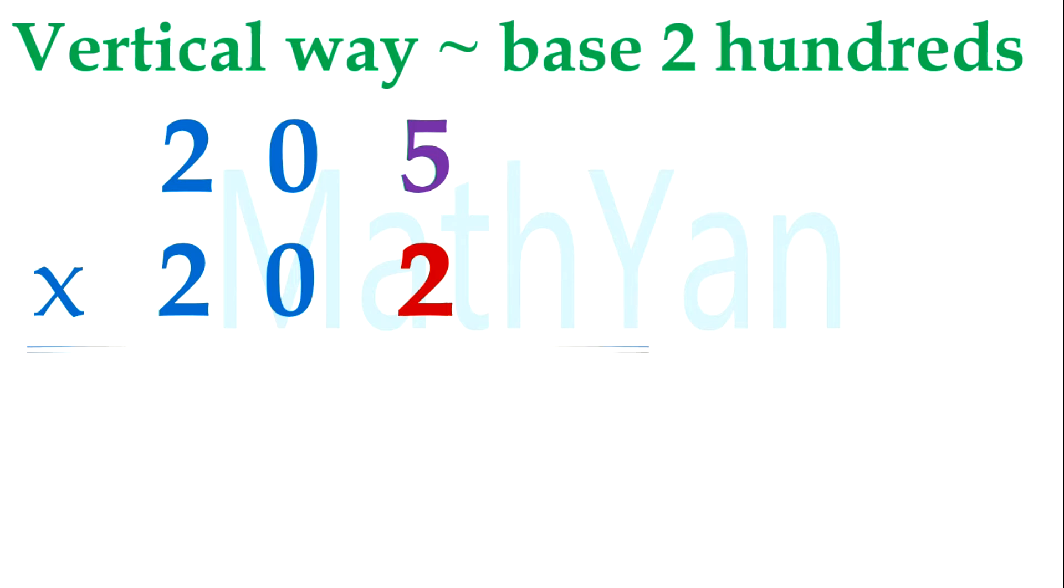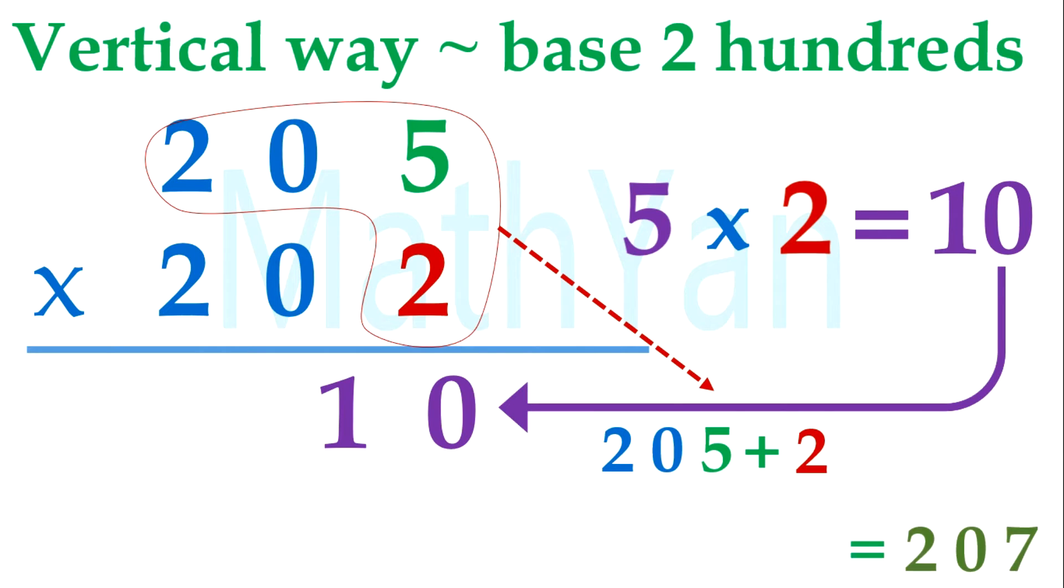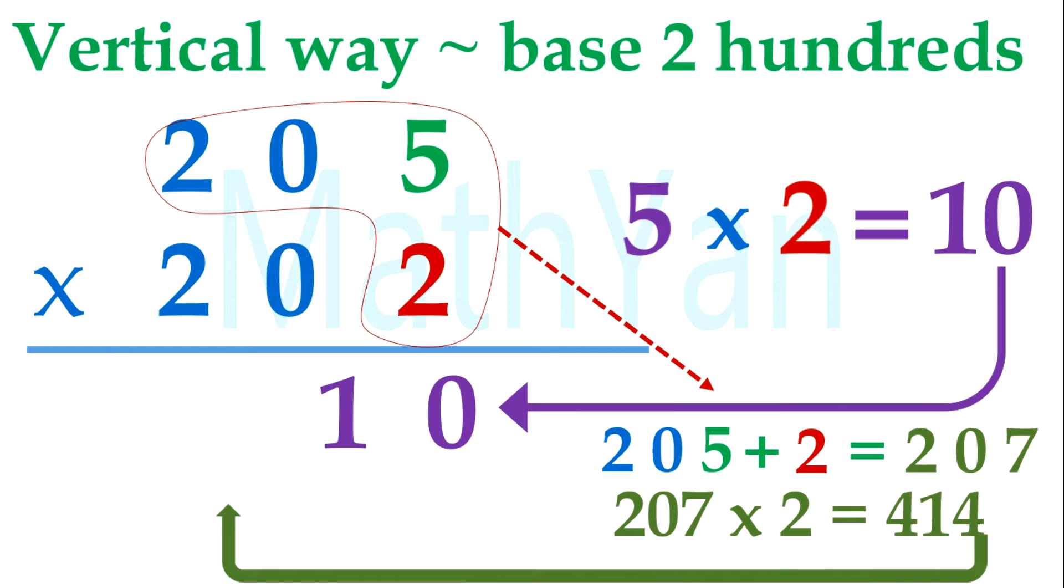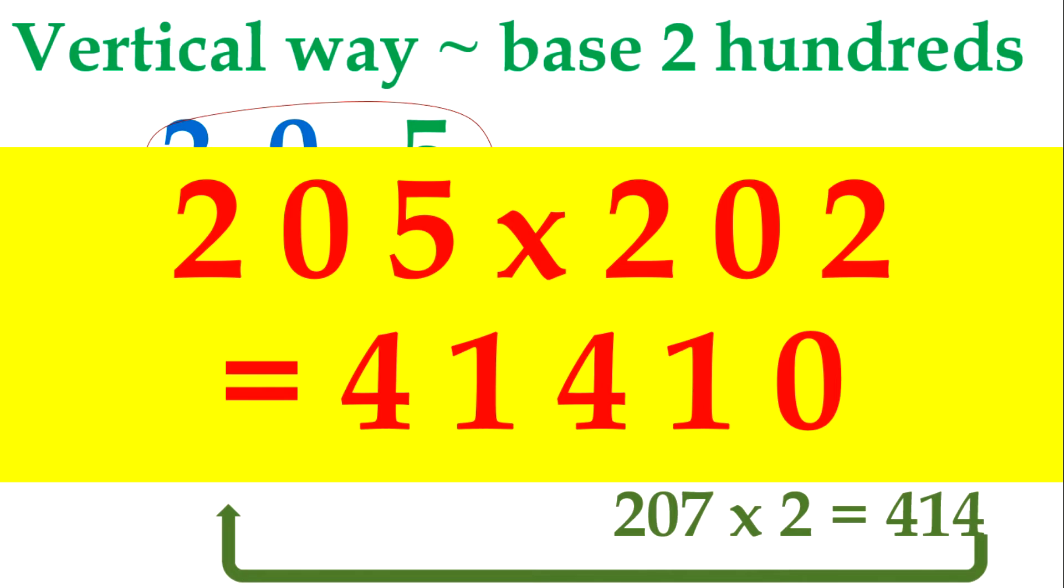What about this? 205 times 202. Same: 5 times 2 equal to 10. So only 2 digits, so 10, don't need to add any 0 in front. Second part is the same: 205 plus 2 is equal to 207. Remember, times 2, it's still 414. So it's 41410. So 205 times 202 is 41410.